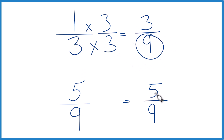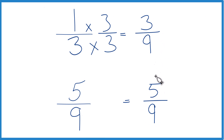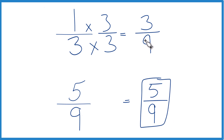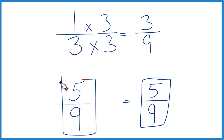Now, since we have the same denominator, we can compare the numerators. Five is greater than three, so five-ninths is greater than three-ninths — by two-ninths (five minus three) — but it's still greater. Since these are equivalent, five-ninths is also greater than one-third. That's it.